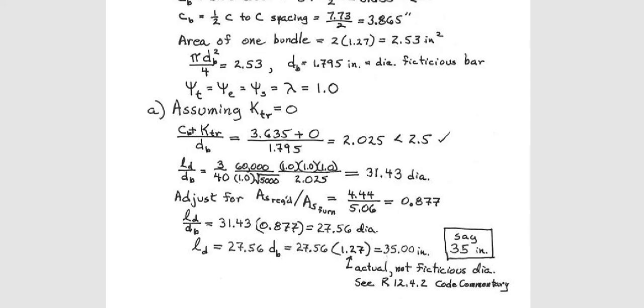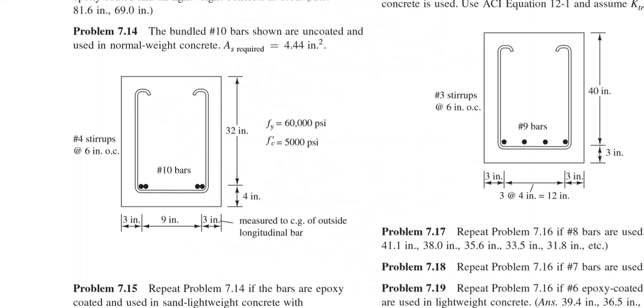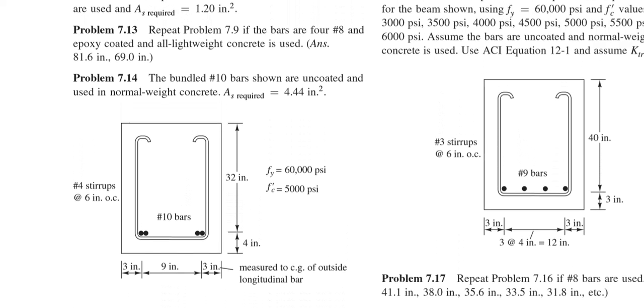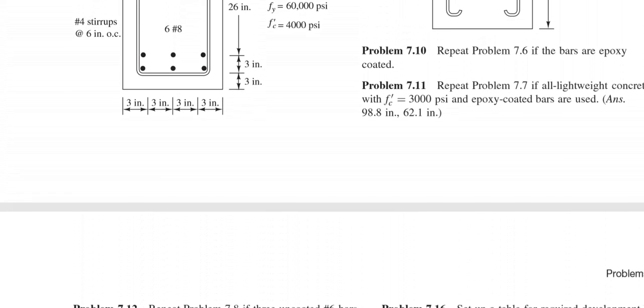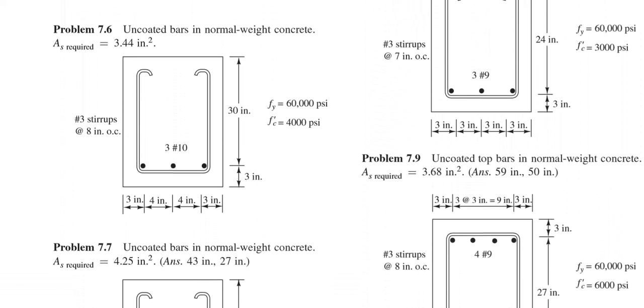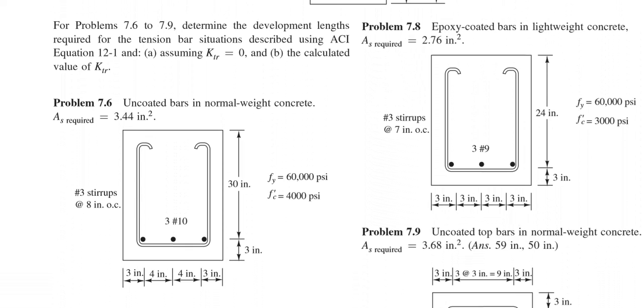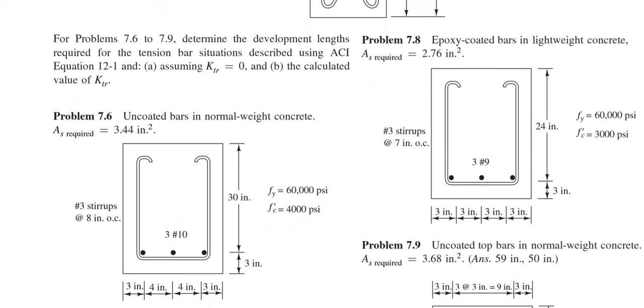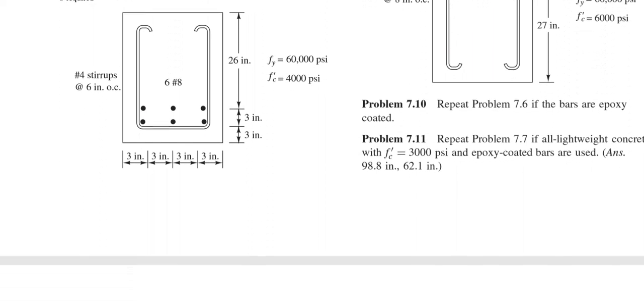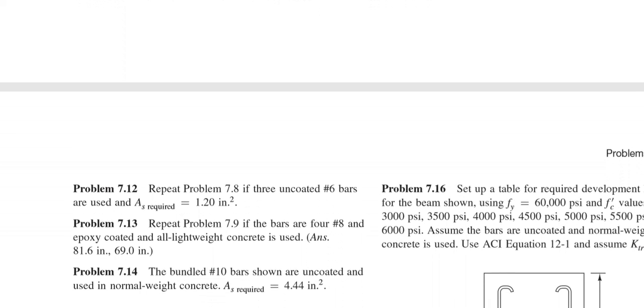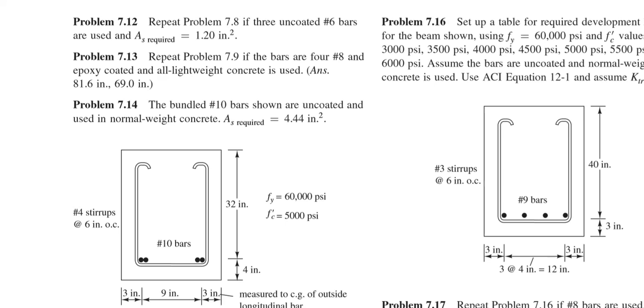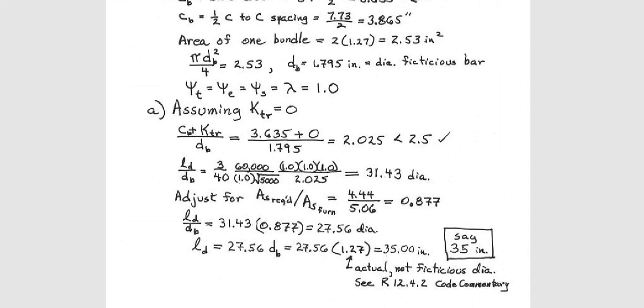So 3 over 40, fy, lambda times square root of f'c. Oh, this time f'c is 5000. I do not know whether your book showed it here. Maybe before the problem they showed or they told us somewhere. Or yes, I'm sorry, I forgot it is here. f'c is 5000 given here. So f'c here, psi t, psi e, psi s all are 1 and this portion is coming from here, 2.025. They found 31.43 times diameter because they used diameter here.